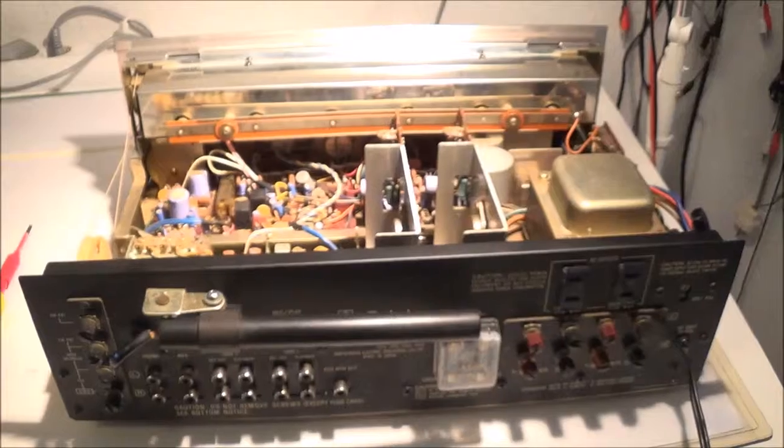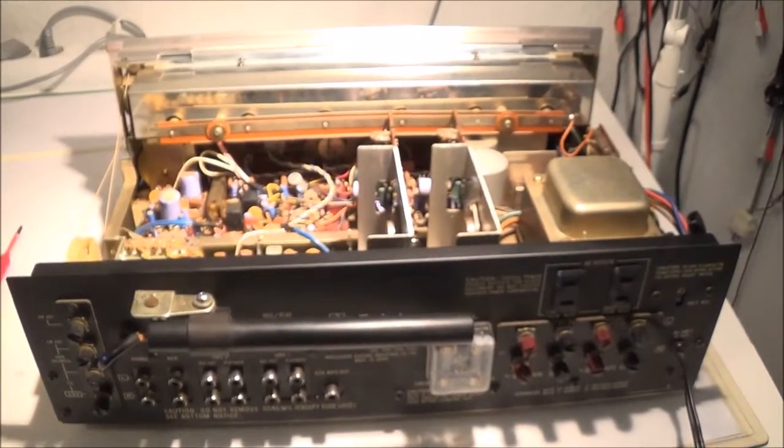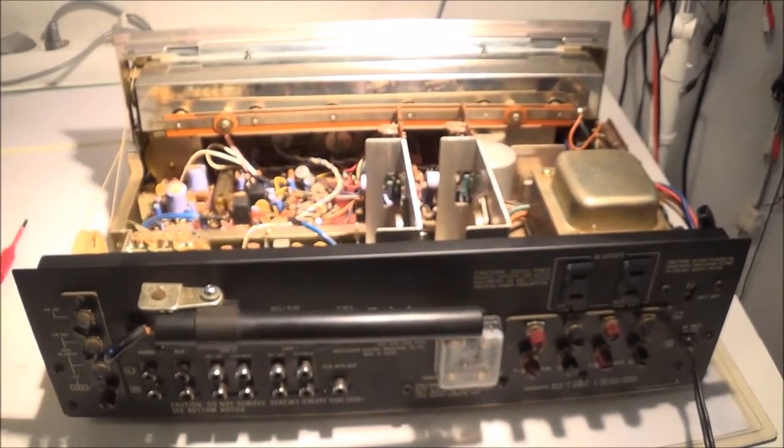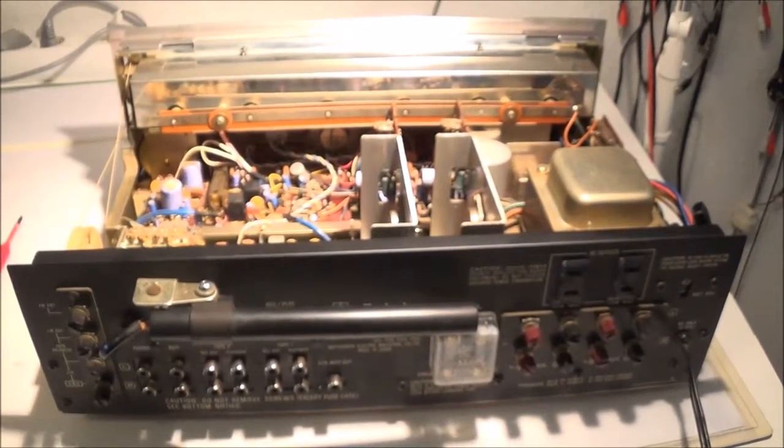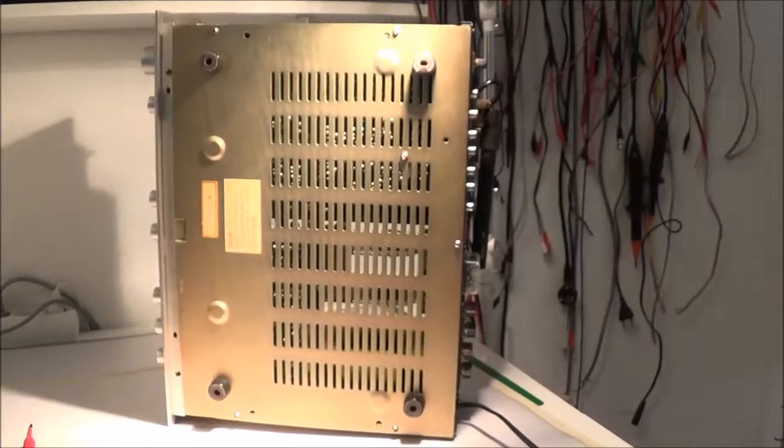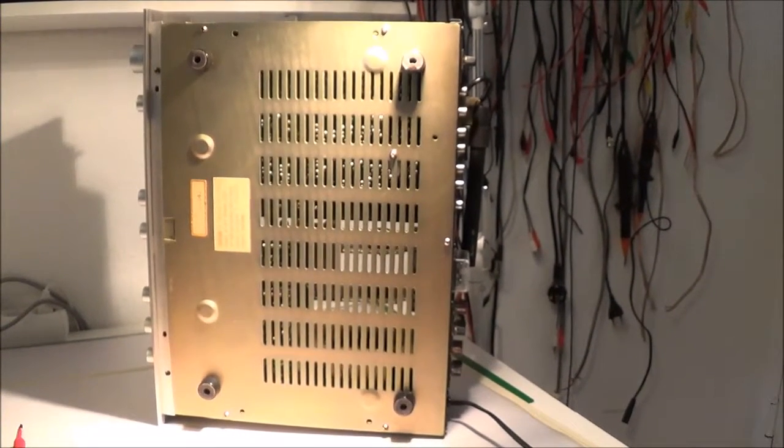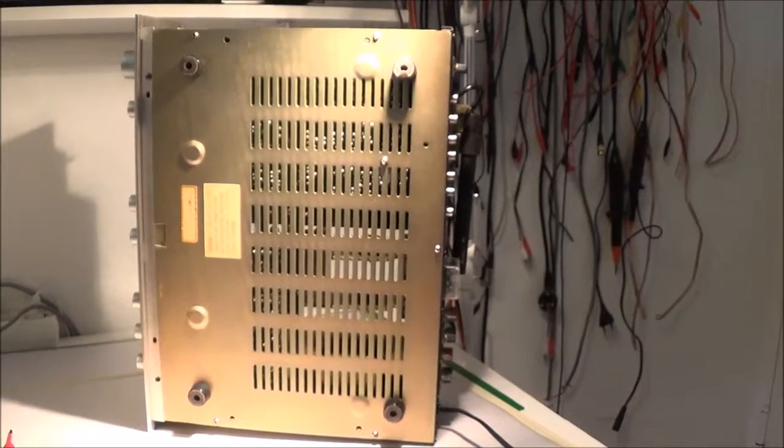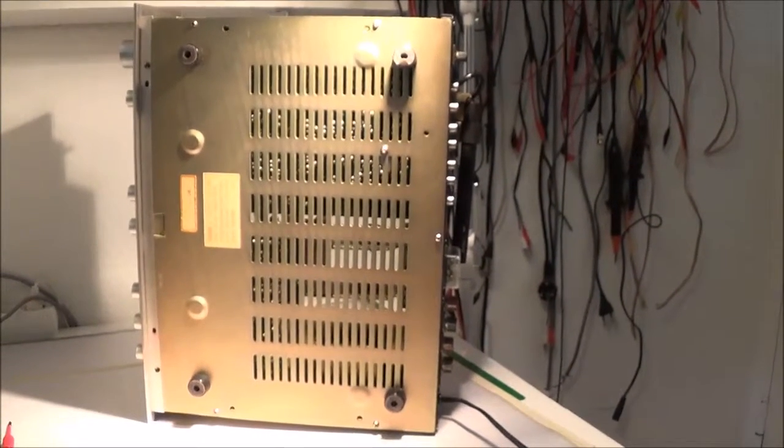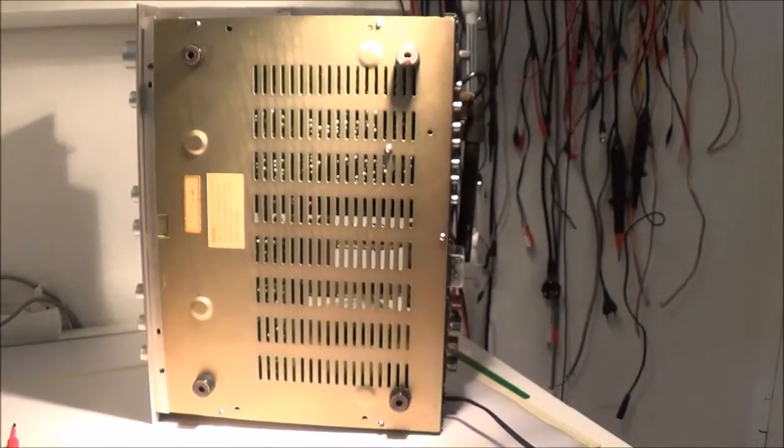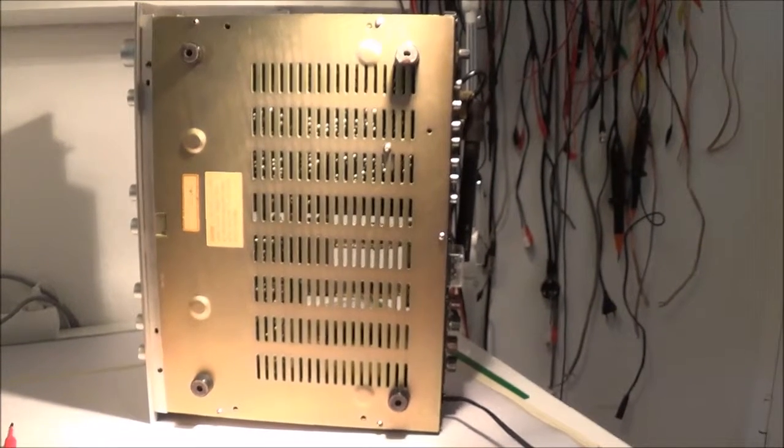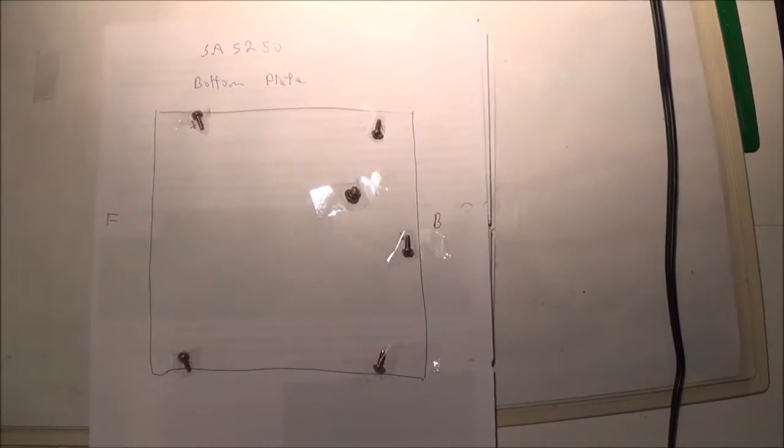So I removed the top cover and now I'm going to remove the bottom plate. This is how it looks from the bottom. I put the receiver on its side. It looks like there's six screws holding this bottom plate on. I'm going to go ahead and remove those. They're Phillips screws.